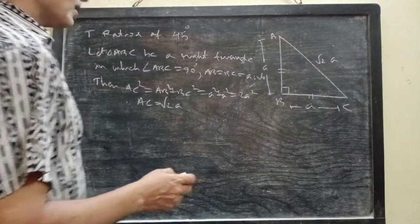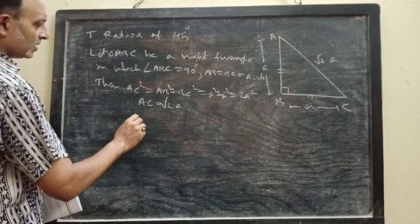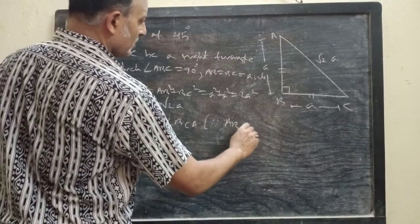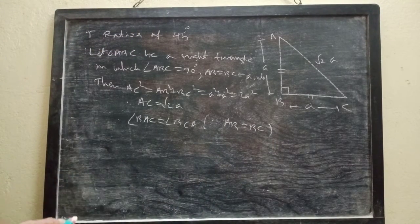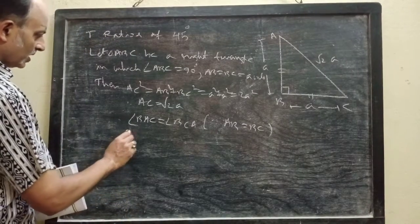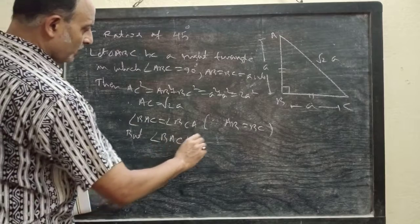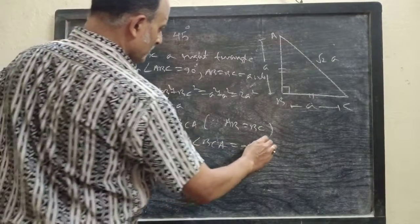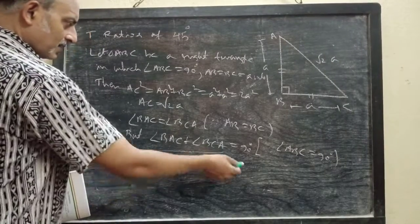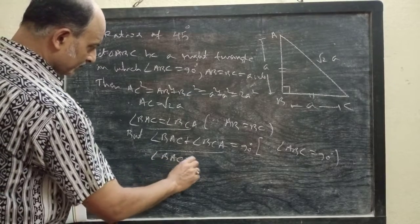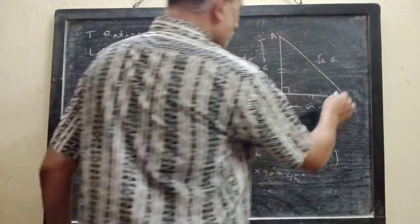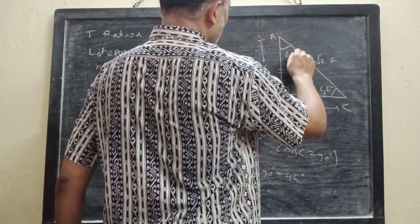Since AB = BC, angles opposite to equal sides are equal, so angle BAC = angle BCA. As angle ABC is 90°, the remaining two angles must sum to 90°. Since their measures are equal, each angle is half of 90° = 45°. So both angles BAC and BCA are 45°.